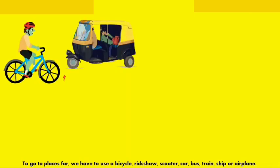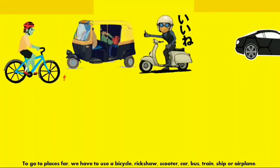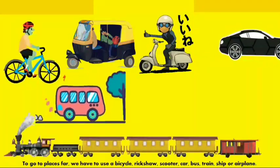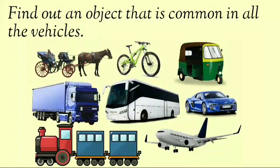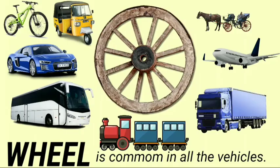We can walk to places which are very close. To go to places far, we have to use a bicycle, rickshaw, scooter, car, bus, train, ship, or an aeroplane. Find out an object that is common in all the vehicles — animal cart, bicycle, auto rickshaw, tempo, bus, car, train, aeroplane. In sabhi mein ek cheez common hai. Can you find that common object? Yes — the common object in all the vehicles is the wheel.